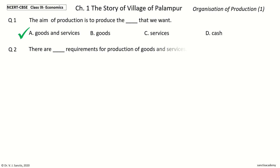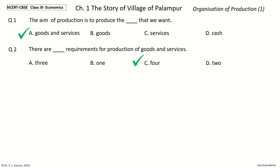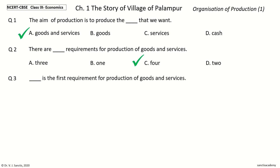Question 2: There are dash requirements for production of goods and services. The options are 3, 1, 4, or 2. Your time to choose. And the answer is 4. So, there are 4 requirements for production of goods and services.